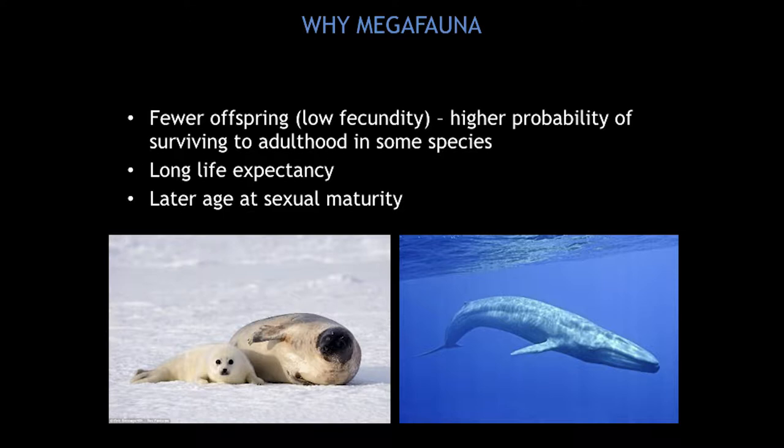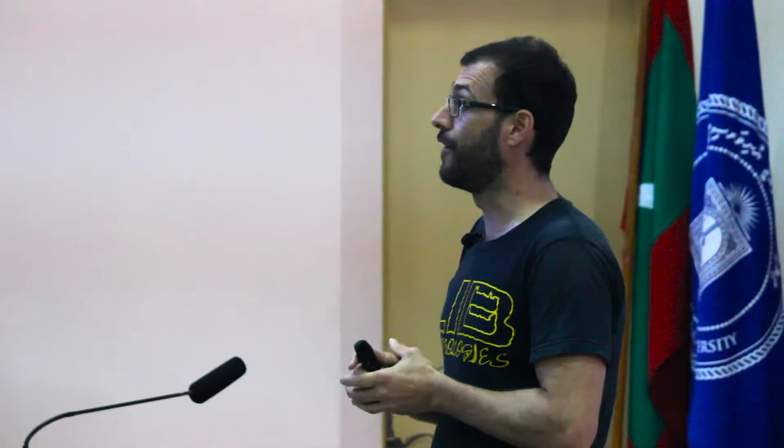Very different from an r-selected life strategy such as fish, which generally spawn with no parental care. Megafauna also have a long life expectancy — a sea turtle can live 75 to 80 plus years, and whales even hundreds of years in some instances. They also have a higher age of sexual maturity. A sea turtle takes 25 plus years to become sexually mature, where a fish could be a few months or at most a couple of years.